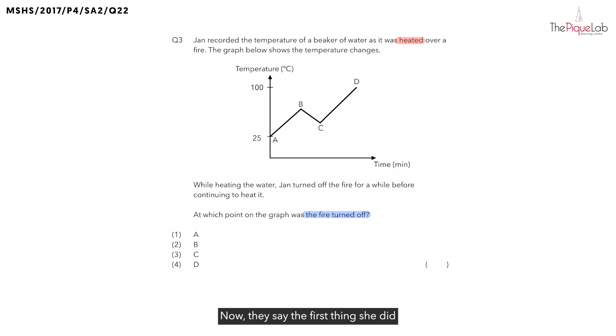They said the first thing she did was she was going to heat up the water. When she heats up the water, is the water going to gain heat or lose heat? The water is going to gain heat from the heat source and the temperature will increase. If you look at the graph, which part shows you the temperature first increasing? It's from A to B. This is when she heated the water.